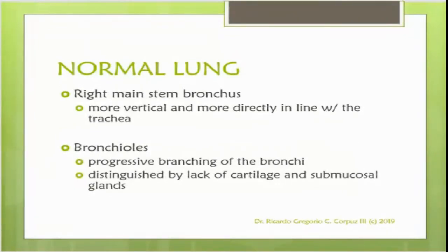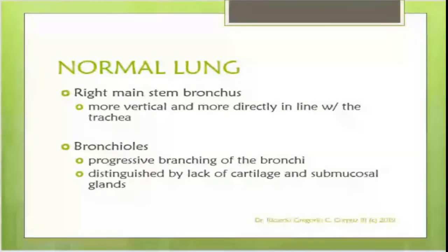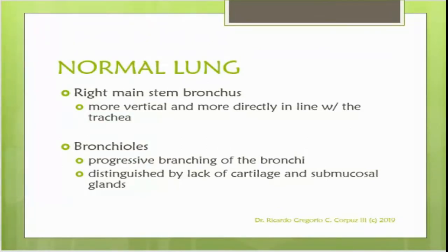In the normal lung, the right main stem bronchus is more vertical and more directly in line with the trachea, which is why most foreign objects are lodged at the right main stem bronchus. The bronchus undergoes progressive branching, distinguished by lack of cartilage and submucosal glands. For example, if a patient accidentally swallowed a coin, you would need to determine whether the coin is lodged in the bronchus or trachea rather than in the esophagus.